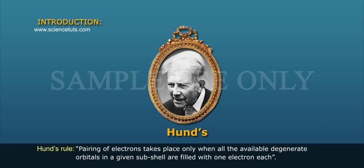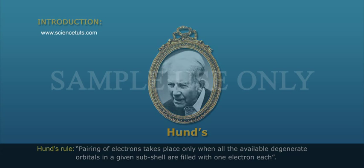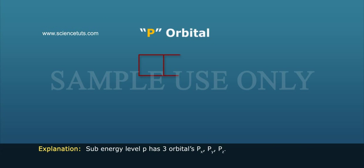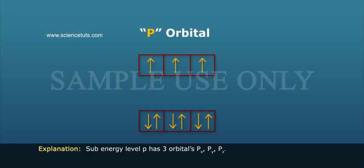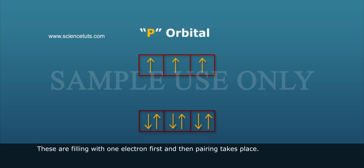Pairing of electrons takes place only when all the available degenerate orbitals in a given subshell are filled with one electron each. Subenergy level P has three orbitals: Px, Py, and Pz. These are filled with one electron first, and then pairing takes place.